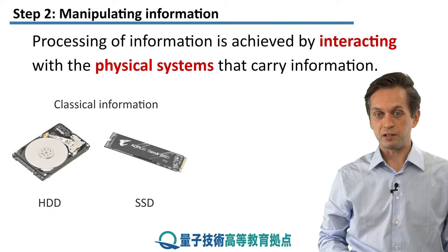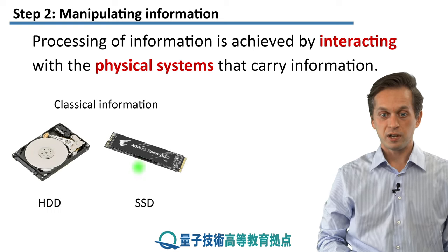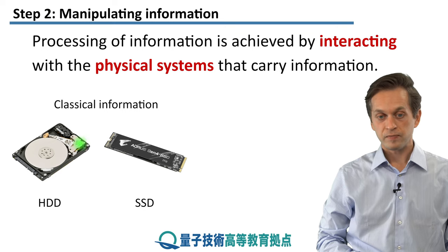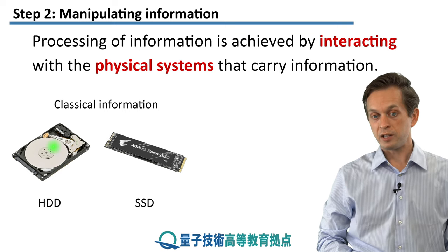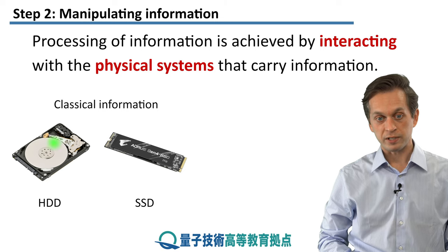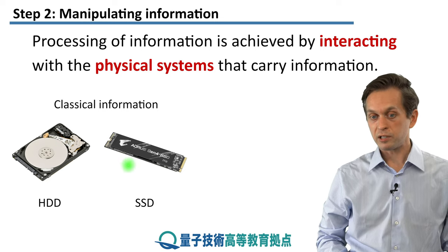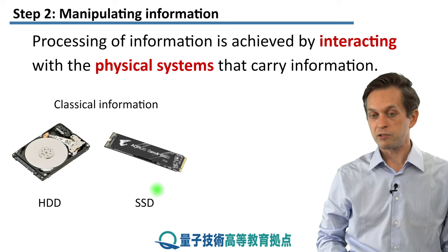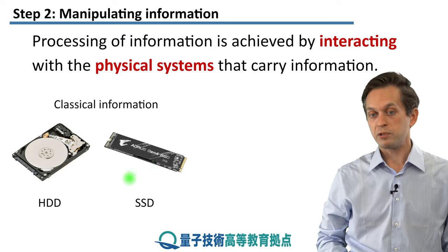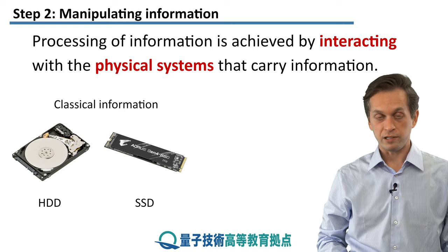For example, in classical information you've got two very good examples in HDDs where you read, write, and manipulate information with very weak and precise magnetic fields. And for an example of a younger technology, we can look at the solid state drive where you do the same thing, but you achieve it by manipulating very weak electric currents.